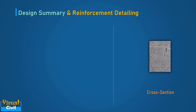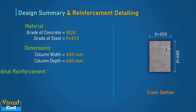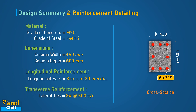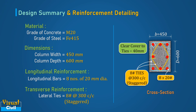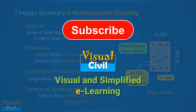Finally, summarizing the design: an axially loaded rectangular short column is designed with M20 grade concrete and Fe415 steel. The width is 450 mm and the depth is 600 mm. Eight numbers of 20 mm dia bars are provided as longitudinal reinforcement, while 8 mm dia lateral ties are provided at 300 mm center to center. If you like this video, share your thoughts in the comment section, subscribe to the channel, and press the bell icon to get notifications of such civil engineering videos.